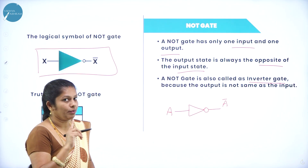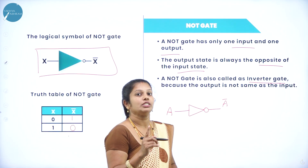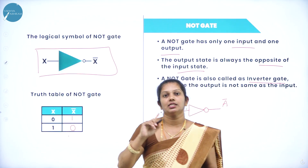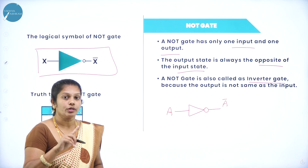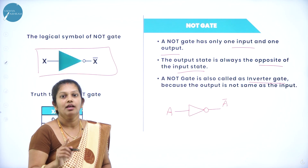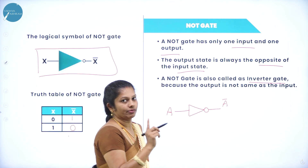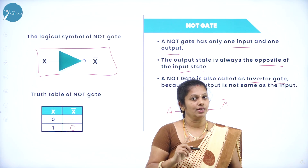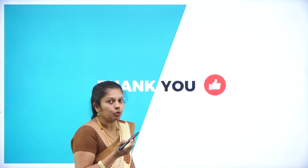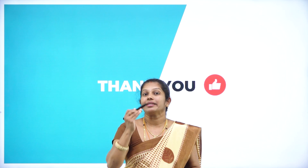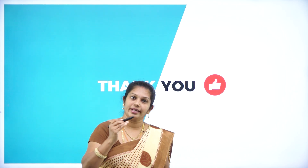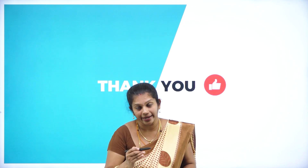On this class you have come to know what is a gate, which are the basic gates, which are the derived gates, and under basic gates — what is AND gate, OR gate, and NOT gate — including how to write the symbol and truth table for two variables as well as three variables. In the next class you will come to know about derived gates: NAND gate, NOR gate, Exclusive OR gate, and Exclusive NOR gate.